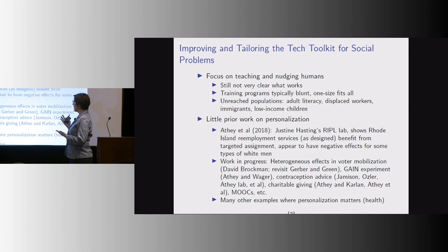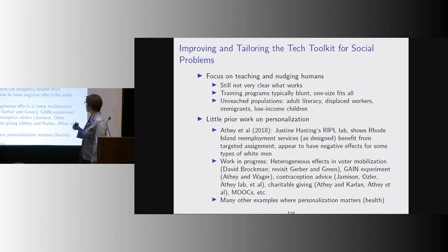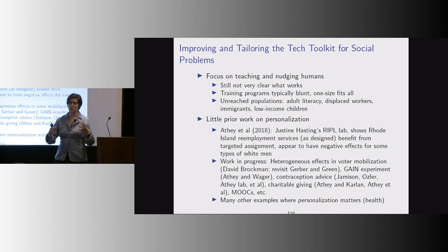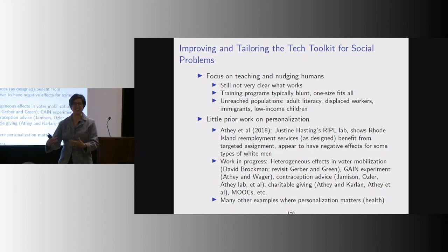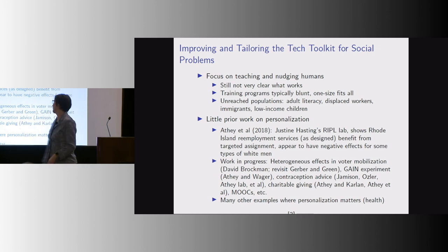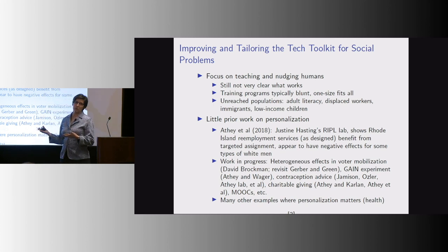We've started a whole slew of projects to apply this in practice. One bearing early fruit is with Justine Hastings' Ripple Lab, looking at Rhode Island re-employment services, showing they're really good for some people but actually discouraging for certain groups of white men — there's a negative effect where you stay on unemployment longer after going to these workshops. We estimate the benefit of a personalized or targeted policy and show that it's substantially better.